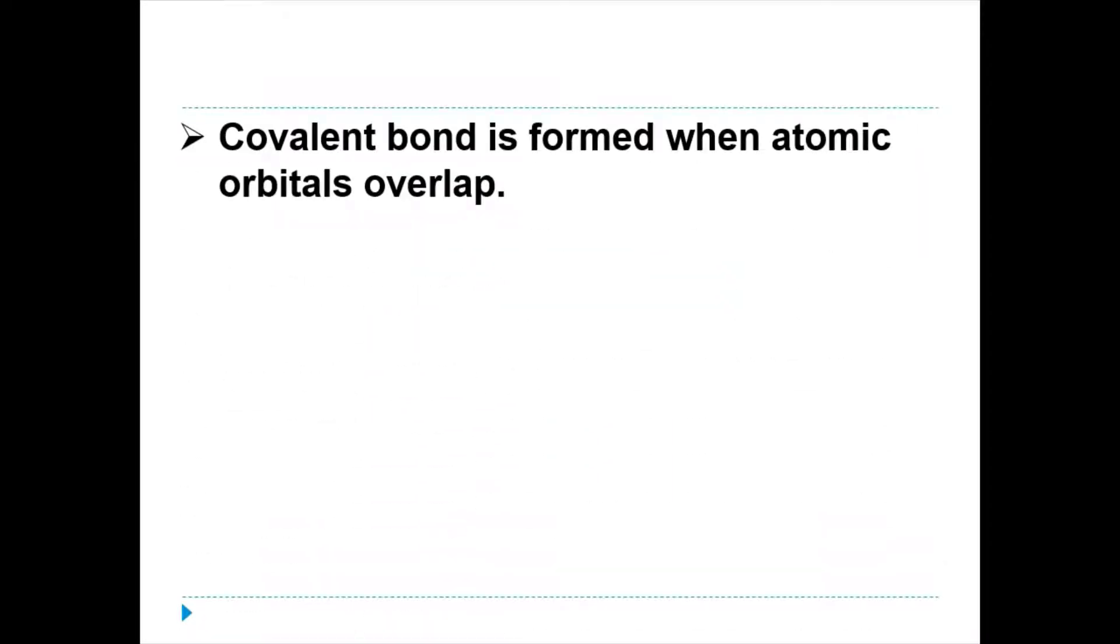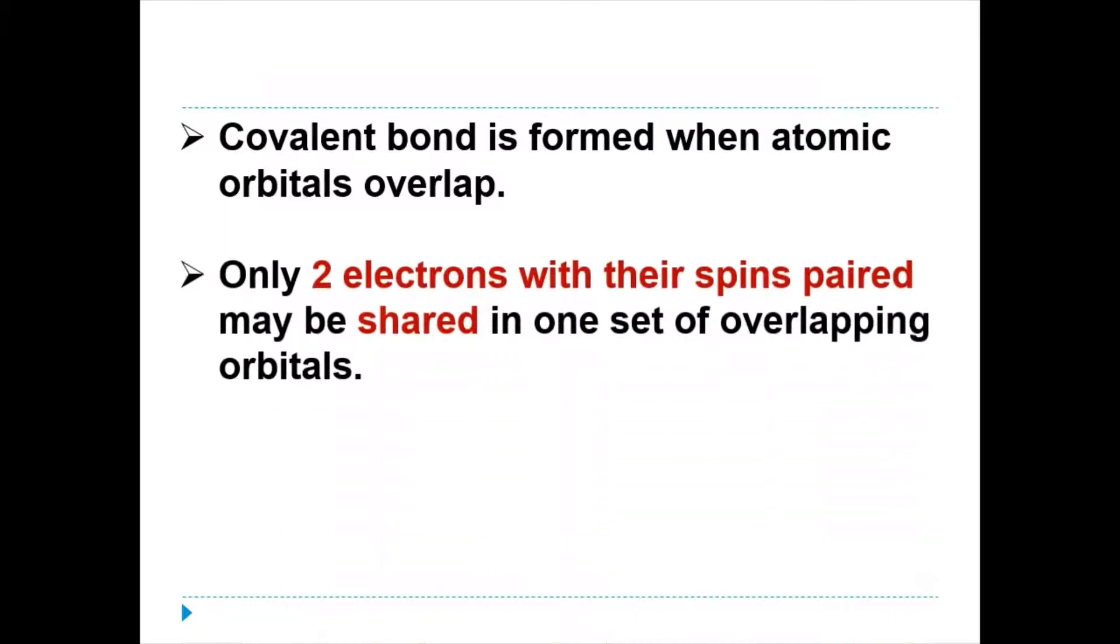We can say that the covalent bond is formed when atomic orbitals overlapped. In one set of overlapping orbitals, there are two electrons with their spins paired. Two types of bond are sigma bond and pi bond. What are they?